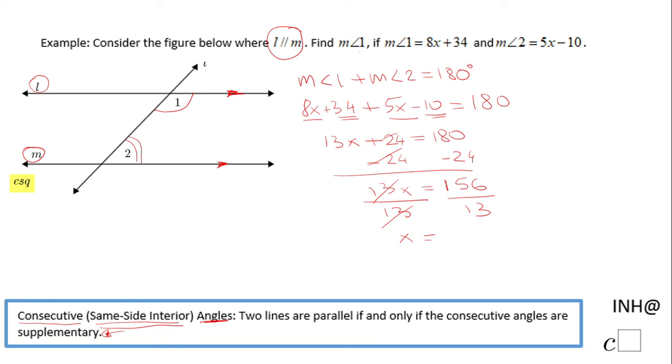And that is 12. Now we need to find the measure of angle 1, so we need to do one more thing, which is replace x in measure of angle 1, which is 8x plus 34, with 12.